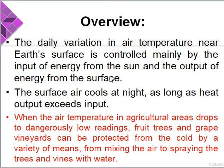The daily variation in air temperature near Earth's surface is controlled mainly by the input of energy from the Sun and the output of energy from the surface of the Earth. The surface air cools at night as long as heat output exceeds input. When the air temperature in agricultural areas drops to dangerously low readings, fruit trees and grape vineyards can be protected from the cold by a variety of means, from mixing the air to spraying the trees and vines with water.